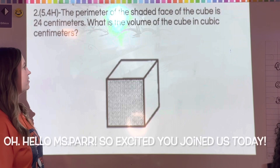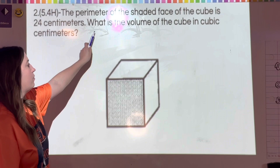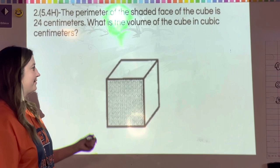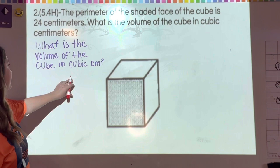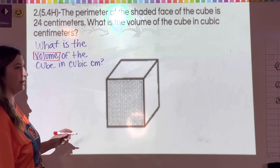Number two: the perimeter of the shaded face of a cube is 24 centimeters. What is the volume of the cube in cubic centimeters? Go ahead and pause the video, write down the question, then press play once you've written it.